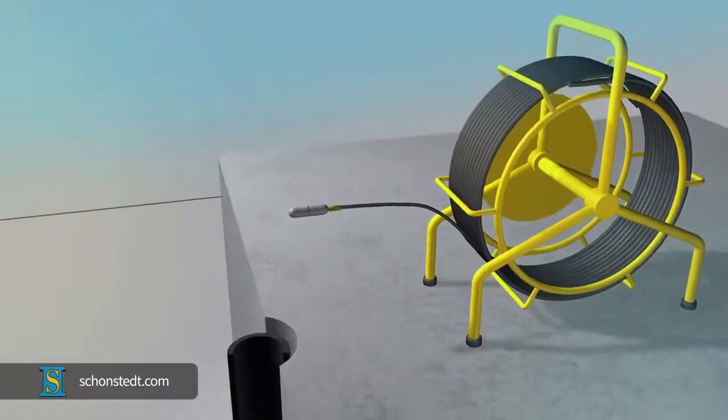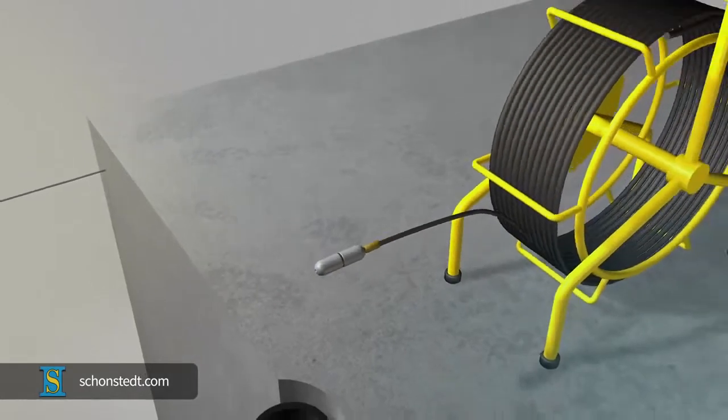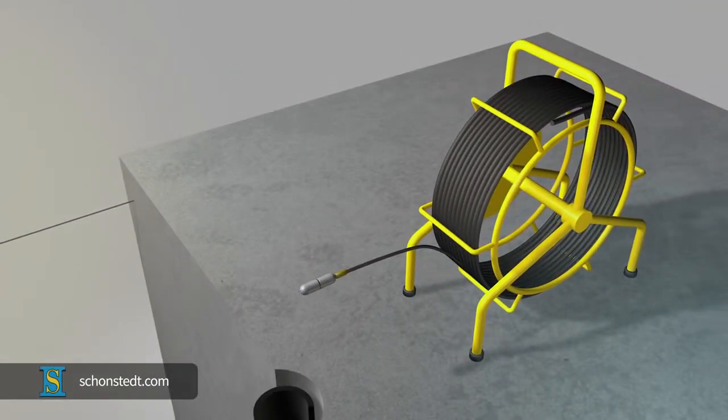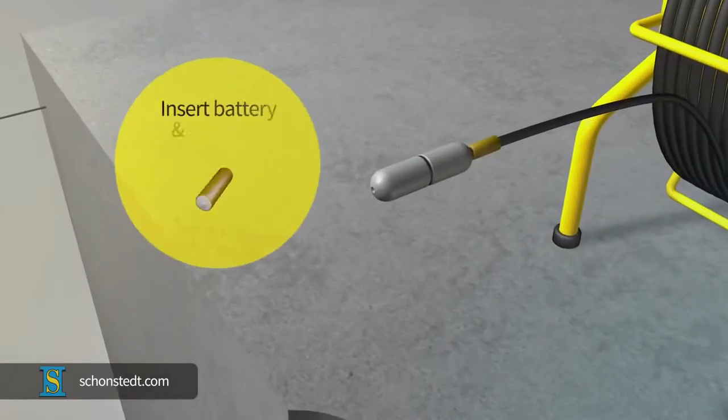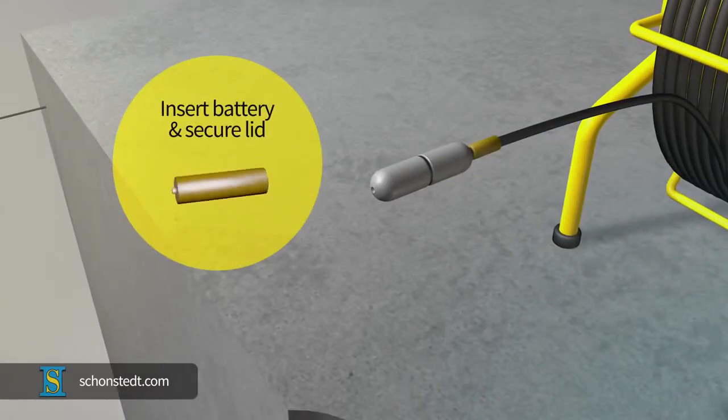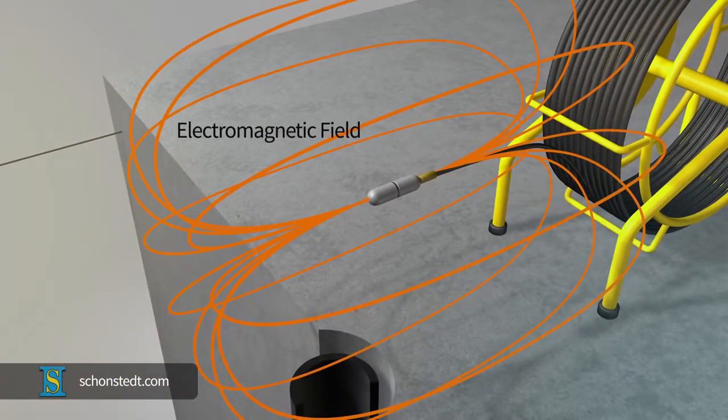In order to work, the sonde requires a battery and must be attached mechanically to a snake or long flexible cable to allow an operator to push it into the pipeline. Once the battery is inserted with the proper polarity and the lid is tight, the transmitter begins emitting an electromagnetic field of a certain standard frequency that the receiver can detect.